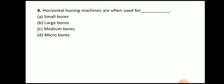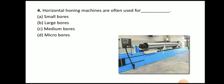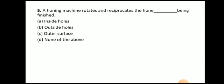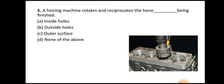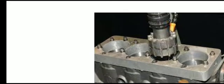Next question: horizontal honing machines are often used for large bores. So whenever you want to super finish large bores, we can use a horizontal honing machine. Next question: a honing machine rotates and reciprocates the hone inside the hole being finished. Here you can see this is the hone, and this is the hole that we want to finish. The hone reciprocates as well as rotates inside this hole.